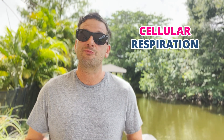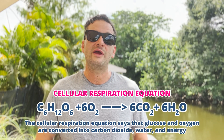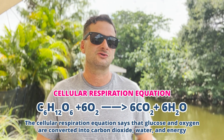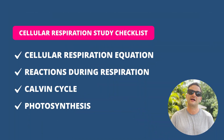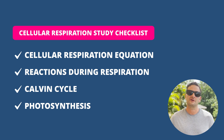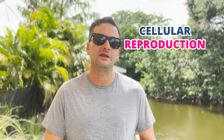For cellular respiration, the information you studied on metabolism will help you understand and answer those questions. You'll want to know the equation for cellular respiration and the reactions involved: glycolysis, oxidation of pyruvate, the citric acid cycle, and the electron transport chain. Also understand photosynthesis and the Calvin cycle and what the processes are in photosynthesis.